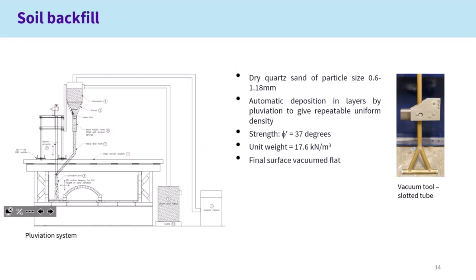I'll say a bit about soil backfill. It's something very complicated that goes into bridges — often quite random and varied. We just wanted a repeatable material that we could model to help us understand what was going on, so we're using a sand. It's automatically deposited by pluviation in layers, achieving very consistent density and strength. The pluviation puts in pretty flat layers, and the very final layer we vacuum flat to get it perfect for the modelling. It's quite an involved system with vacuums and drums.